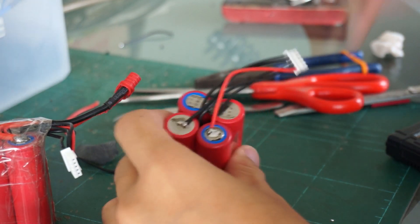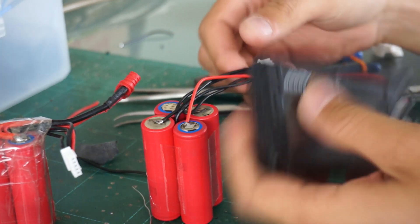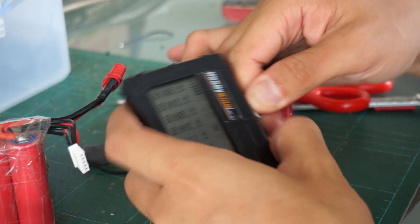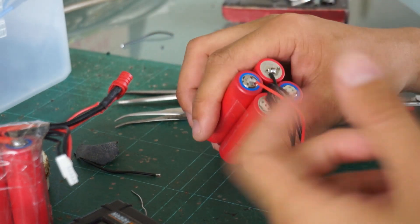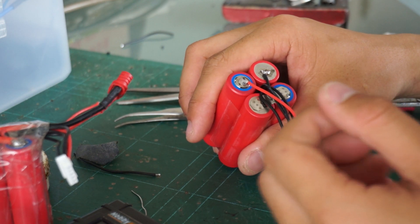If you want to find out whether you've done this correctly or not, especially the balance lead, just plug it to your battery checker. Looks okay. Second step to check is to plug it to your battery charger. If it's a good battery charger, it can tell you whether it is properly built or not, or it will show an error.